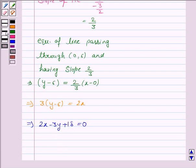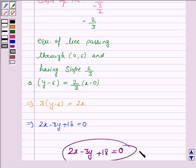Hence, the required line is 2x - 3y + 18 = 0. This completes the question. Hope you enjoyed this session. Goodbye and take care.